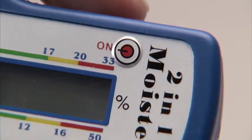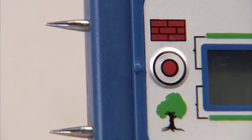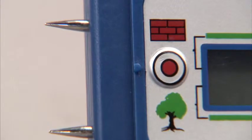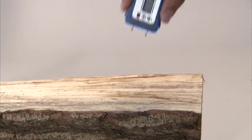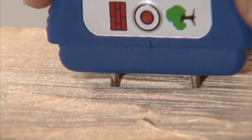Press the on button for an accurate reading of the moisture content. By using the selector button, you can change between the wood moisture measurement and the building moisture measurement. Push the two sensor pins gently into the material surface.